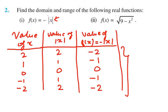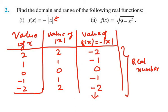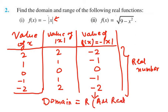Now we need to check whether these are real numbers. We have minus 2, minus 1, 0, minus 1, minus 2 — all are real numbers. You can see that f(x) will always be negative or zero. Therefore, we can conclude that f(x) belongs to the real numbers, and you can take any value of x and verify — you will always get either a negative number or zero. So the domain is all real numbers, R.